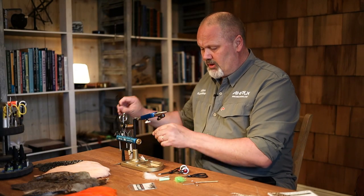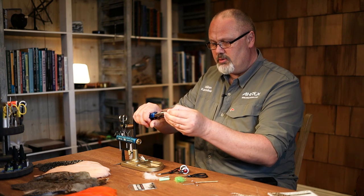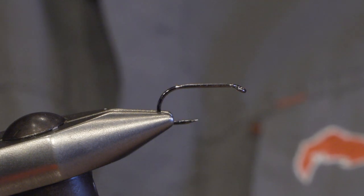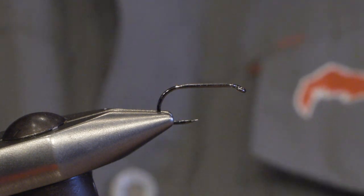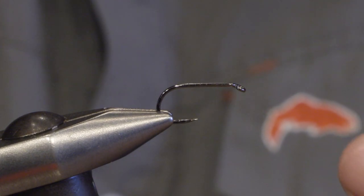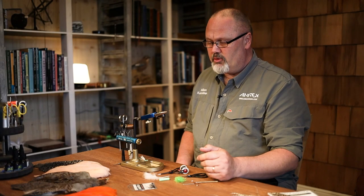I will be using a dry fly hook called FW 504. This is size 8, but you can tie these booby flies down to size 18. The benefit of using a dry fly hook is that it's a bit lighter than other hooks, so the fly floats better.